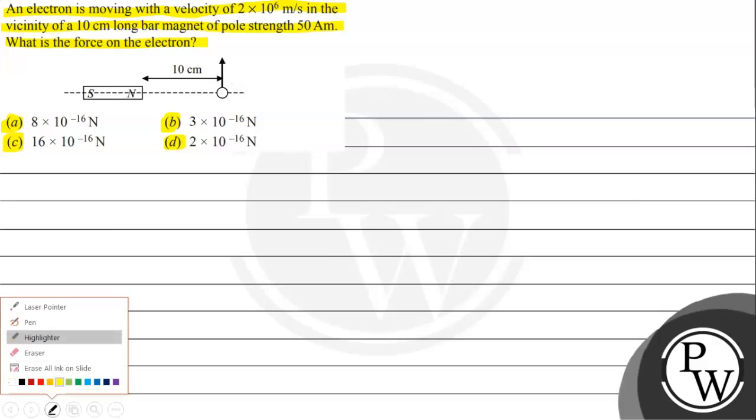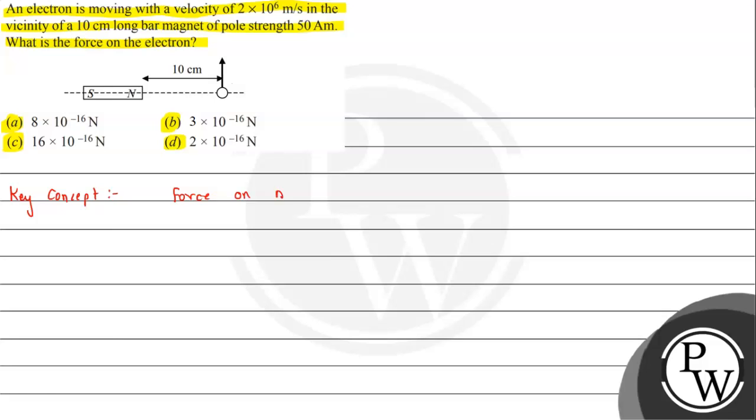To understand this question, we need to understand the concept of force due to magnetic field on moving charge. So we know that when a charged particle moves in a magnetic field, it experiences a force that is given by the expression F = q(V × B).